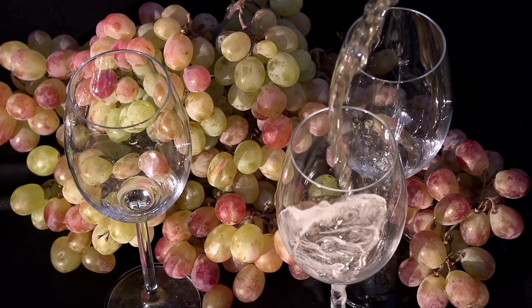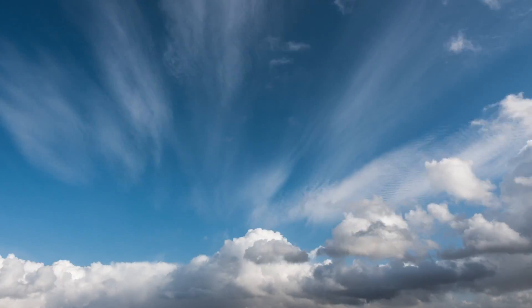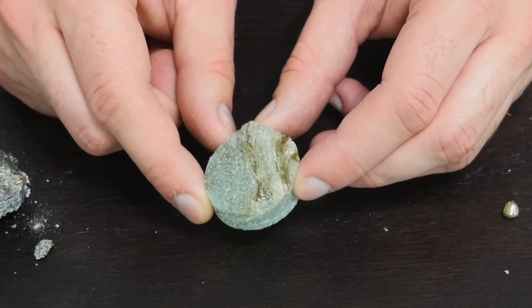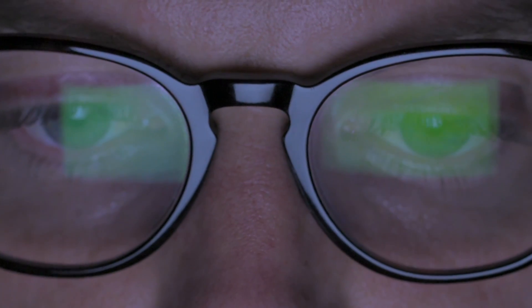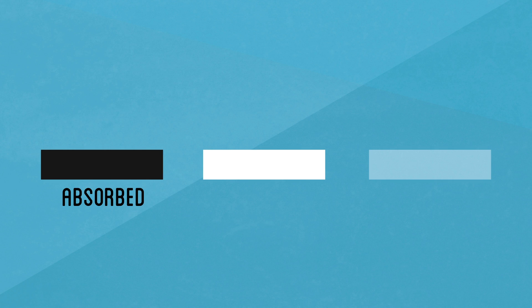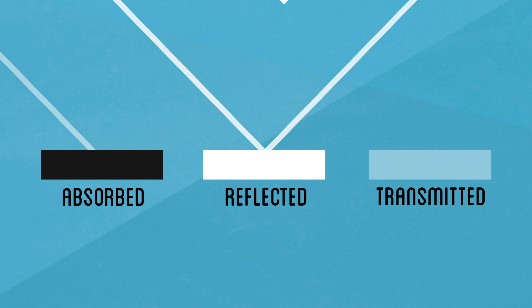Transparent things are all around us, including the air itself. But what determines if something will be opaque or transparent? When photons of light reach an object, it can do three things: be absorbed, be reflected, or pass through it.